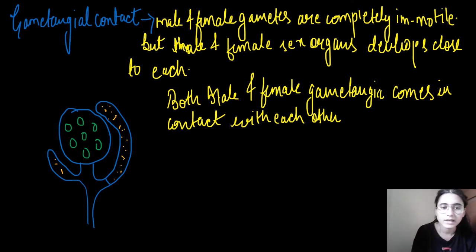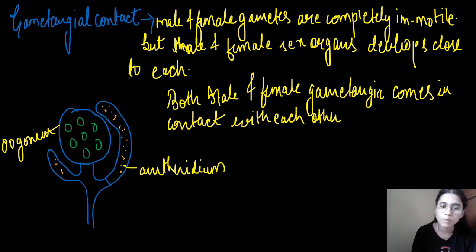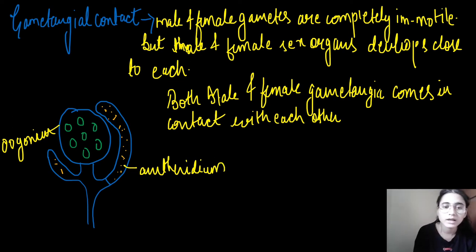You can see that these are the oogonium — this is the oogonium. And this is the antheridium. The oogonium and antheridium are completely immobile; these structures are not moving, but they grow close to each other.